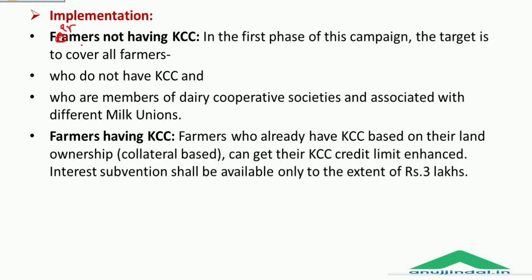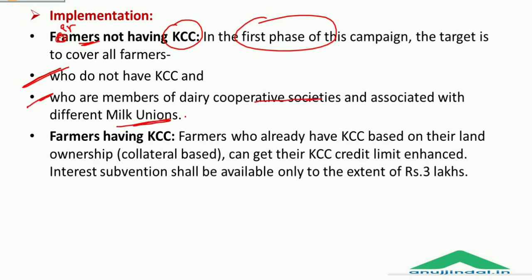In the first phase of this campaign, the target is to cover all farmers who do not have a KCC and who are members of dairy cooperative societies and associated with different milk unions. Farmers who already have a KCC based on their land ownership can get their limit enhanced, and interest subvention shall be available only to the extent of Rs. 3 lakh.